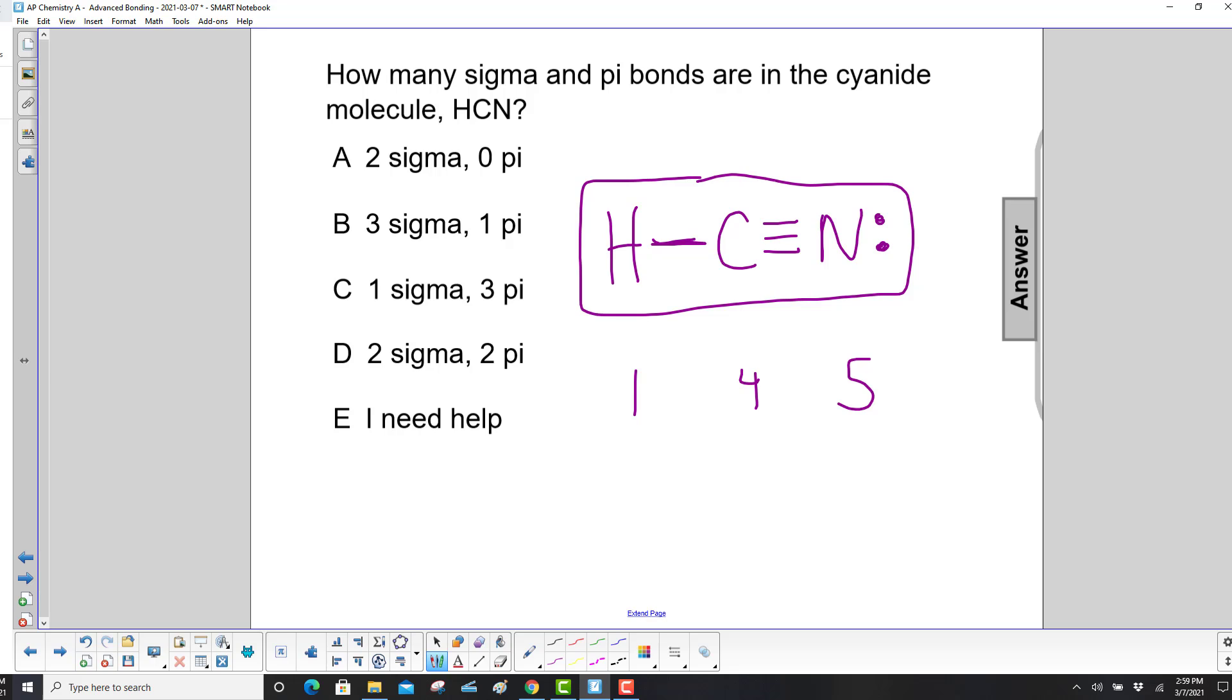Now we have two sigma bonds, because every bond has a sigma bond. So that's going to rule out that one. And then we have a triple bond. A triple bond has two pi bonds. So our answer is D.